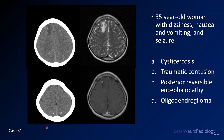Case number 51 is a 35-year-old woman with dizziness, nausea, vomiting, and seizure. There are a couple of images from a CT and a couple from an MRI — a T2 and a post-contrast. Your choices are cysticercosis, contusion, posterior reversible encephalopathy (PRES), or oligodendroglioma.